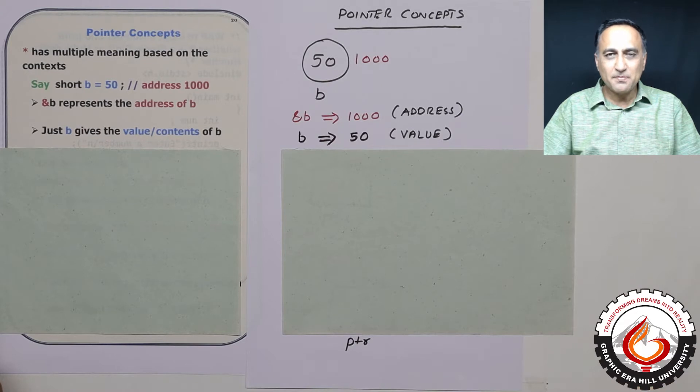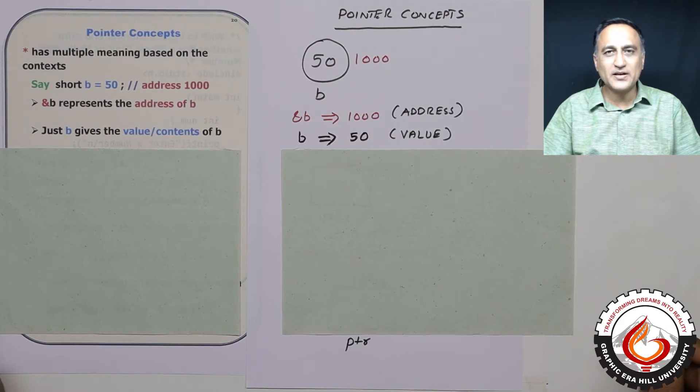Star in C has many meanings based on where it is used. Star can also mean multiplication, but the compiler is smart enough to understand when you're talking about pointers and when you're talking about multiplication.